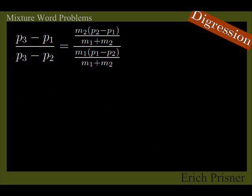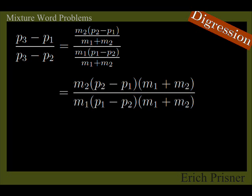Therefore, the quotient of these expressions here, P3 minus P1 divided by P3 minus P2 equals, we plug the expressions in, we get a double compound fraction. Remember, dividing by a fraction means multiplying by its reciprocal. So we get M2 times P2 minus P1 times M1 plus M2, divided by M1 times P1 minus P2 times M1 plus M2. And of course, we can cancel the M1 plus M2, and we can cancel the P2 minus P1 kind of, so we get negative M2 over M1.